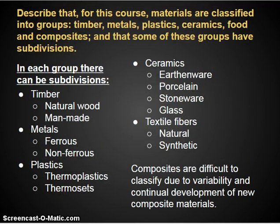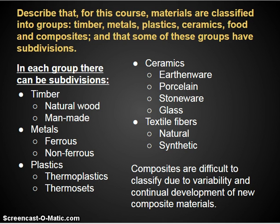In this course, materials are classified into groups: timber, metals, plastics, ceramic, food, and composites. Some of these groups have subdivisions. We won't be addressing food sciences at all in this class, but we will briefly mention it. We will be going into all of the other categories in detail.